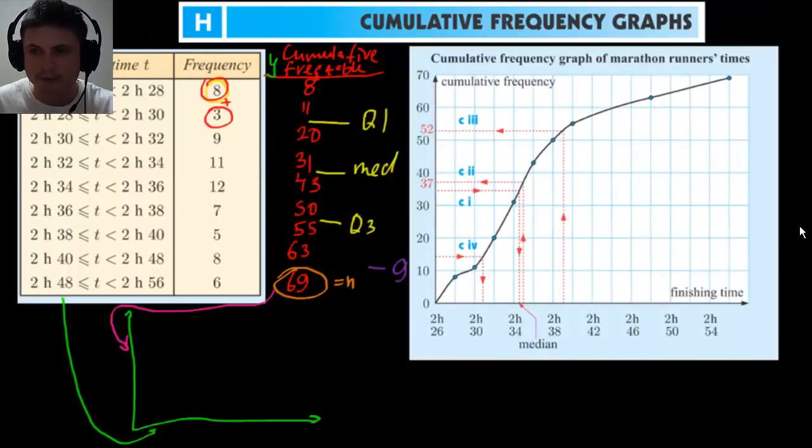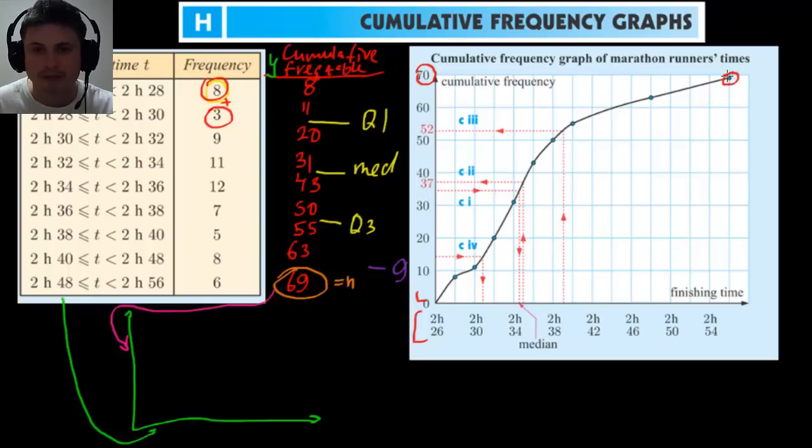And here is the example from the book. That's basically the graph that we would have drawn right here. So on the bottom here, we have our minutes, our hours and minutes. And on top here, we have the cumulative frequency up to number 70, even though our highest number is 69. But this is basically our bottom person, this is the person that came last. Whereas this here is the person that came first.